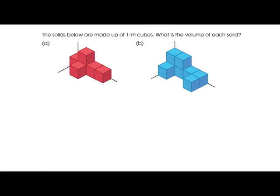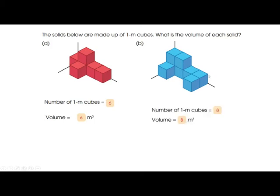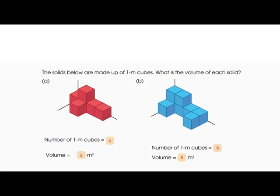The solid figures are made up of one cubic meter. Look at figure A: counting the cubes — one, two, three, four, five, six — they have six cubes, so the volume is six cubic meters. Similarly, when we find the volume of figure B, it will be eight cubic meters.